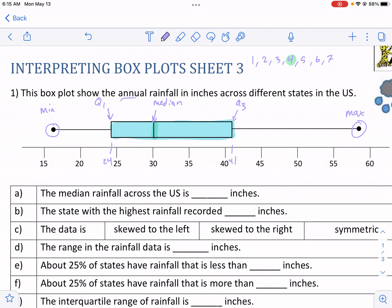So let's go ahead and get started. The median rainfall in the US, we can see where that is, is 30 inches. And that's just reading it off the line there. That line in the middle of the box is the median.